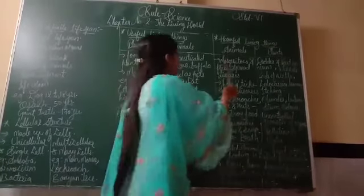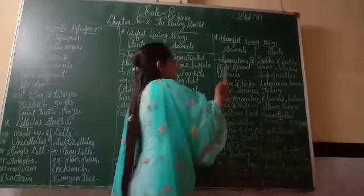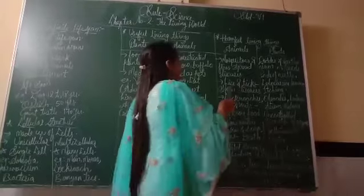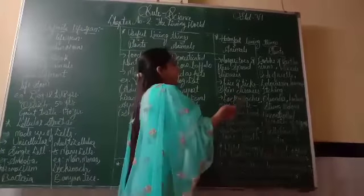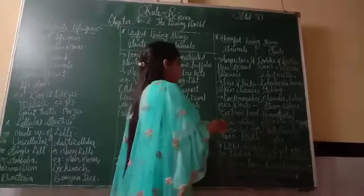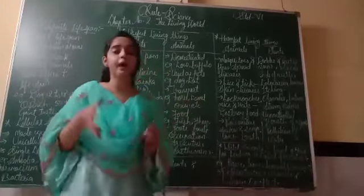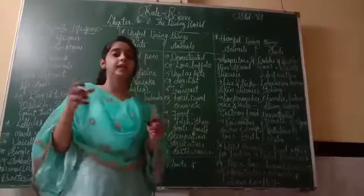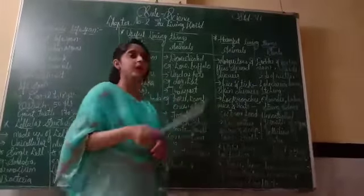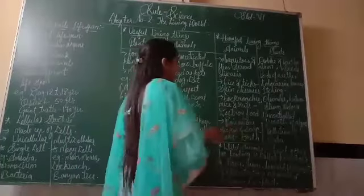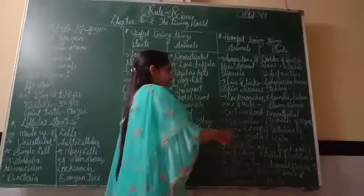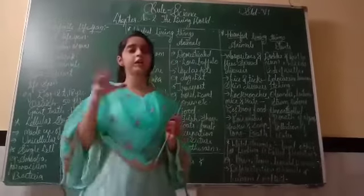Harmful animals include mosquitoes and flies, which spread disease. Next, lice and fleas cause skin disease. Cockroaches, mice, and rats destroy food — they come into our house and nibble sacks of rice and our clothes. Next, poisonous snakes and scorpions are dangerous, and their bite may cause death.